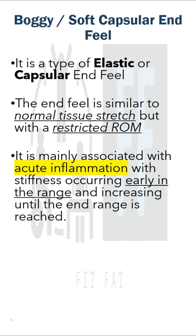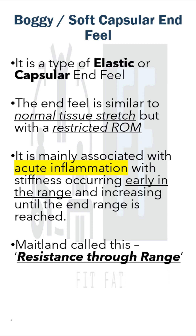It is mainly associated with acute inflammation. There will be some sort of edema with stiffness occurring early in the range and increasing until the end range is achieved. Maitland calls this as 'resistance through range' — as you increase the range, you get an increased resistance.